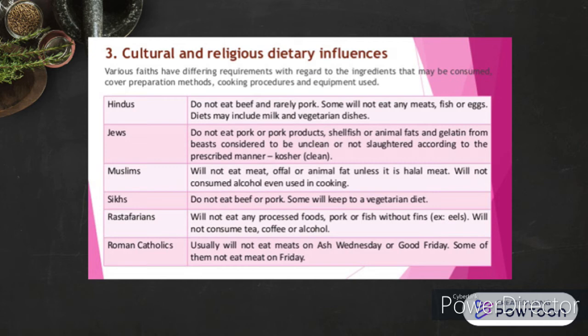Number three: cultural and religious dietary influences. Various faiths have differing requirements regarding ingredients that may be consumed, preparation methods, cooking procedures, and equipment used. Hindus do not eat beef and rarely pork; some will not eat meat, fish, or eggs. Jews do not eat pork or pork products, shellfish, or animal fats and gelatin from beasts considered unclean or not slaughtered according to kosher practices. Muslims will not eat meat or animal fat unless it is halal, and will not consume alcohol even in cooking, as it is considered haram.